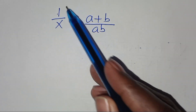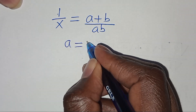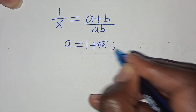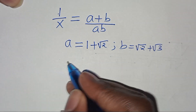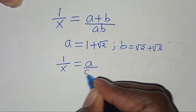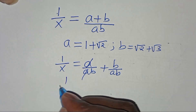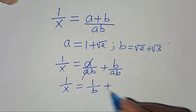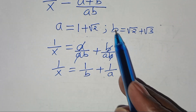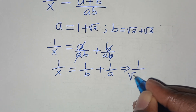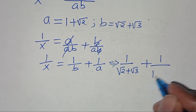Proceeding from here, 1 over x equals a plus b over ab. Recalling that a equals 1 plus square root of 2 and b equals square root of 2 plus square root of 3, this is the same as 1 over x equals a over ab plus b over ab, which simplifies to 1 over b plus 1 over a. Substituting back: 1 over x equals 1 over (square root of 2 plus square root of 3) plus 1 over (1 plus square root of 2).